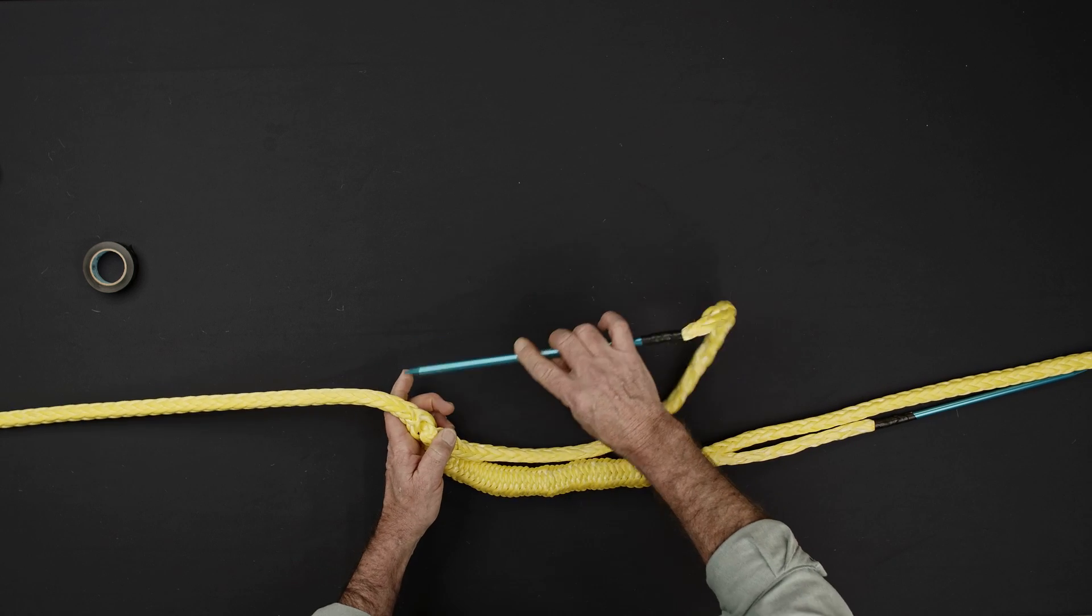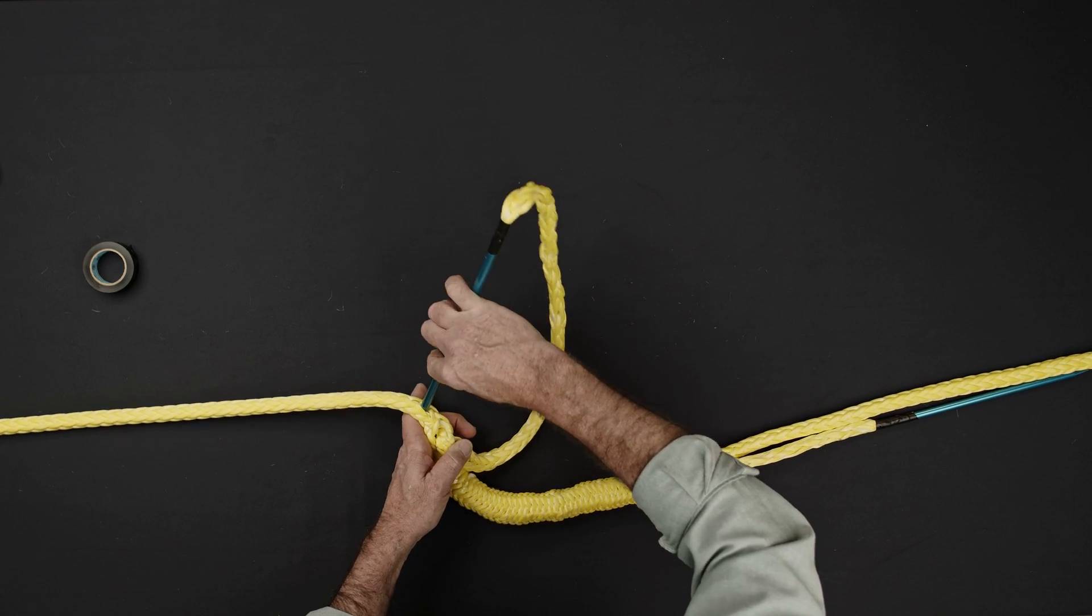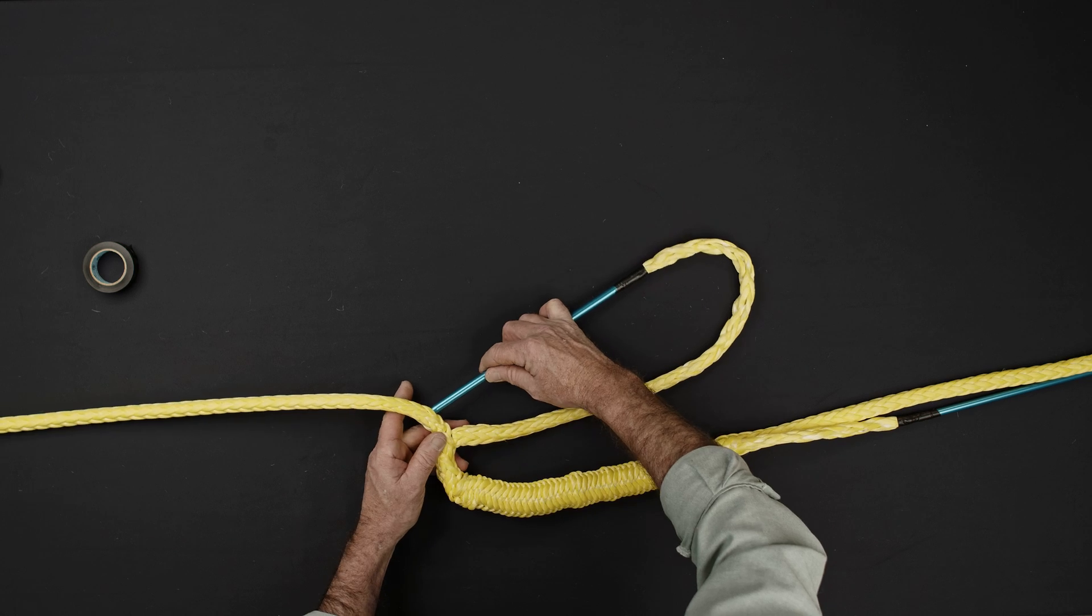Repeat this process on the other side of the splice by forming a brummel 3 picks down from the point where the tail exits the splice.